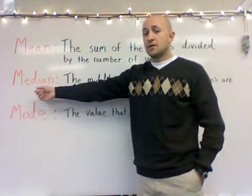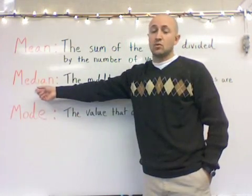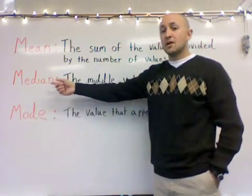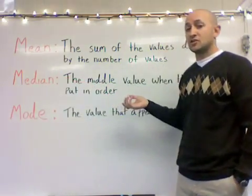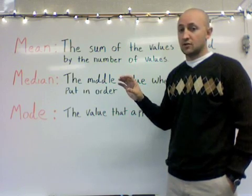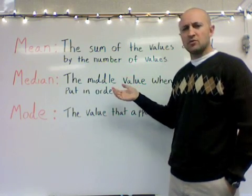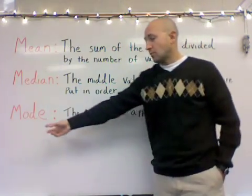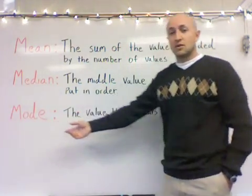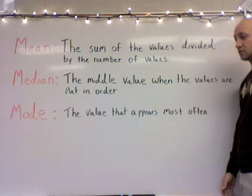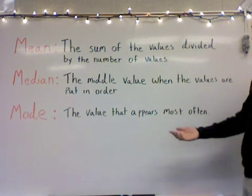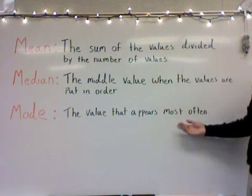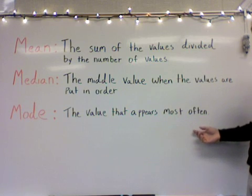To find the median, that's pretty easy. Once our numbers are in order, the median number is the one that is directly in the center. And the mode is another concept that's also extremely easy to find, because the mode is the value or the number that appears most often.